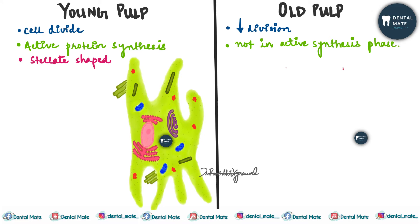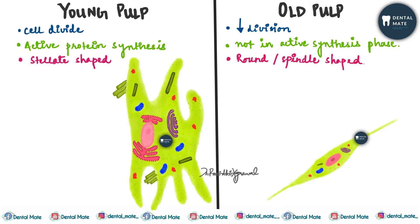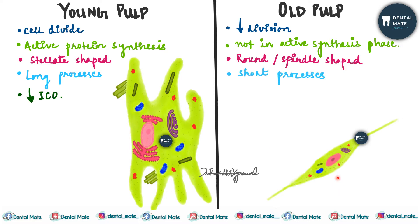Younger pulp fibroblasts are stellate shaped, whereas in old pulp they are round or spindle shaped. Young pulp fibroblasts have long processes, whereas old pulp fibroblasts have short processes.